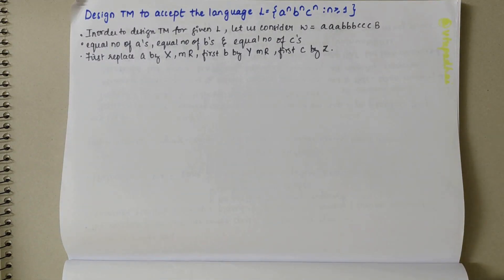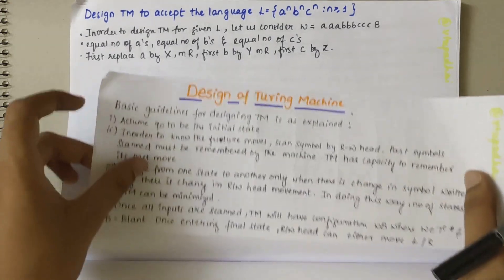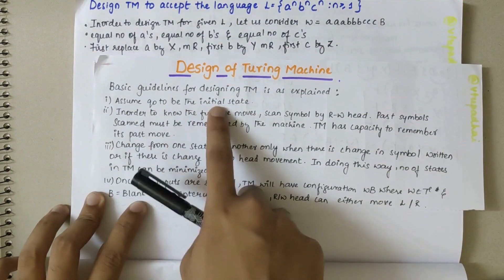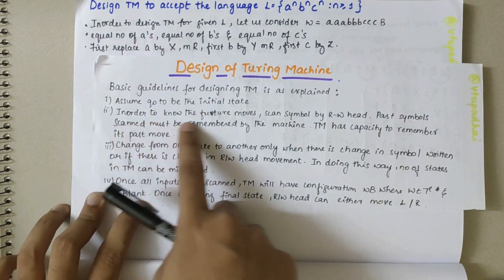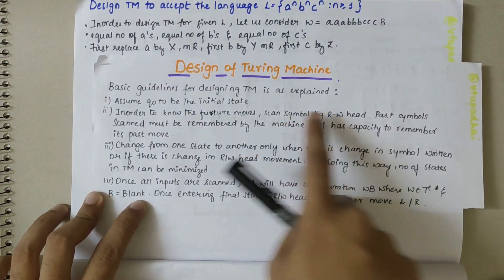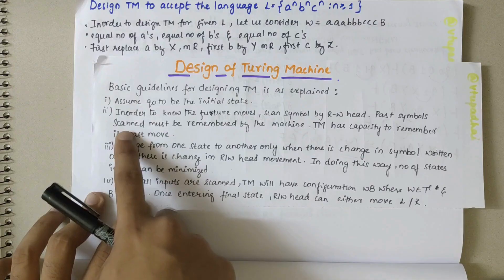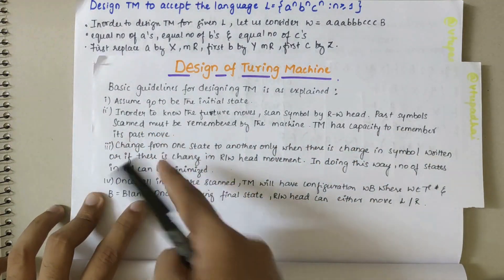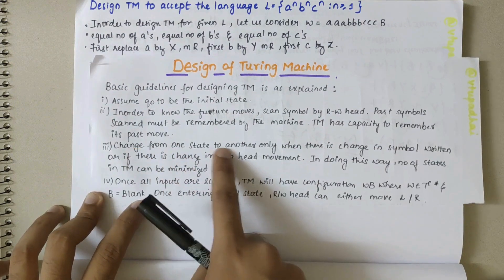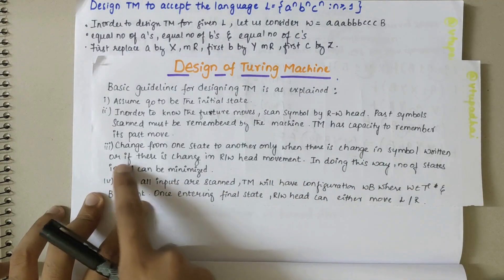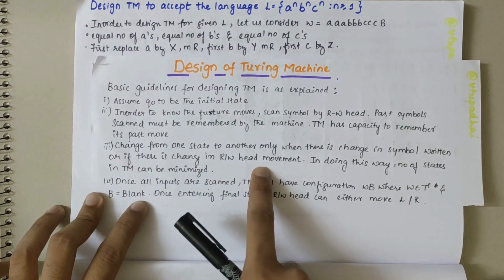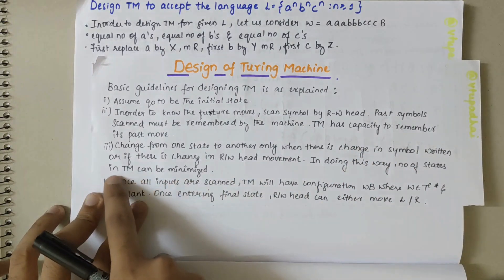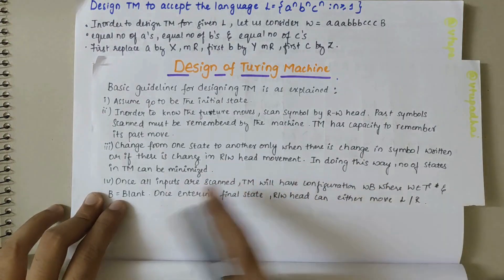Now let's look into the steps to design the Turing machine. First, assume Q0 to be the initial state. In order to know further moves, scan the symbol from the read-write head — past symbols scanned must be remembered by the machine. The Turing machine has the capacity to remember its past move. Change from one state to another only when there is a change in the symbol written or a change in the read-write head movement. In this way, the number of states in the Turing machine can be minimized.